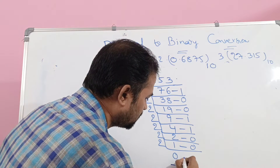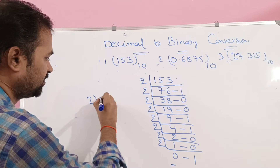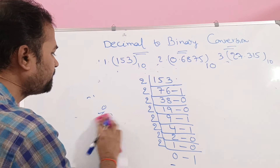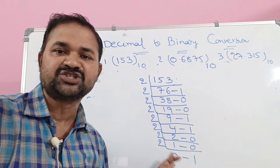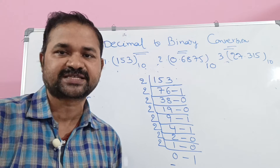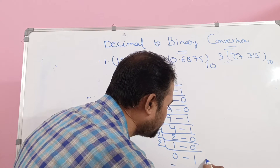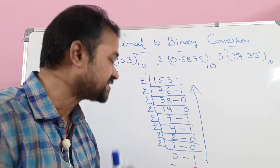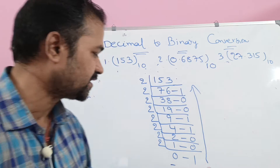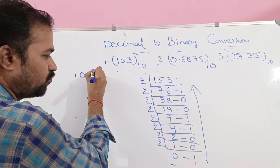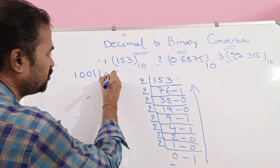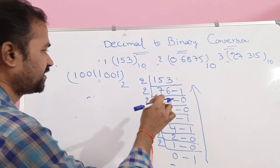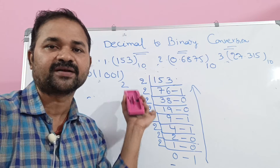Next, divide 1 by 2: 2 times 0 is 0, so remainder is 1 and quotient is 0. For the integer part, we have to repeat the procedure until we get a quotient of 0, then we stop. The result is read from bottom to top. This 1 is the most significant bit and this 1 is the least significant bit. So the binary result is 10011001 base 2.